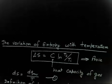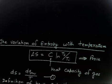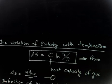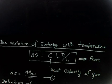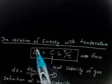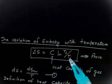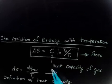Let us go for the next derivation: variation of entropy with temperature. We have already derived one expression for entropy change as a function of volume, that is ΔS = nR ln(Vf/Vi). Now this time we are looking at entropy change as a function of temperature.